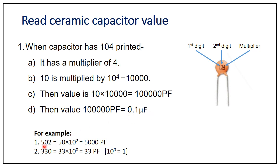For example, with code '502': 5 is the 1st digit, 0 is the 2nd digit, and 2 is the multiplier, so 50 × 10² = 5,000 picofarads. For code '330': 3 is the 1st digit, 3 is the 2nd digit, and 0 is the multiplier, so 33 × 10⁰ = 33 picofarads.